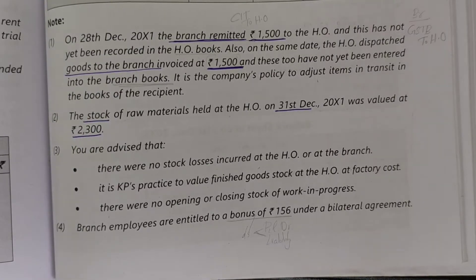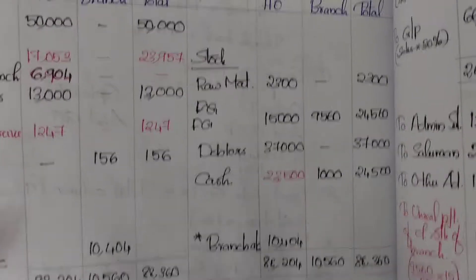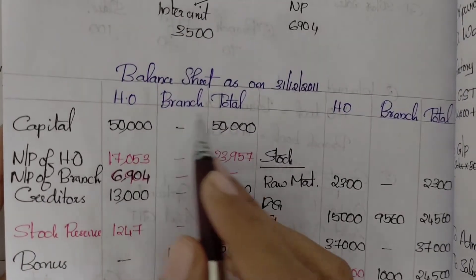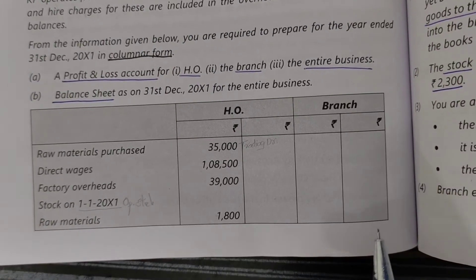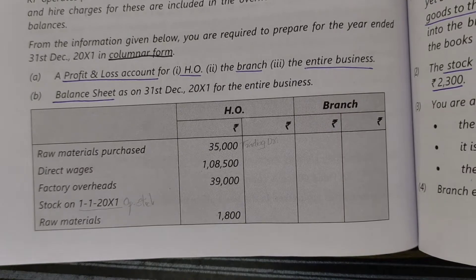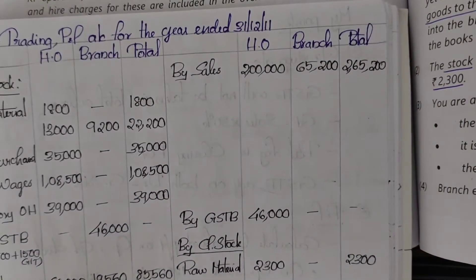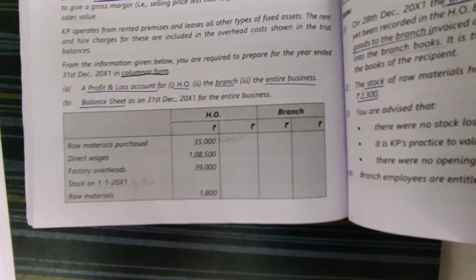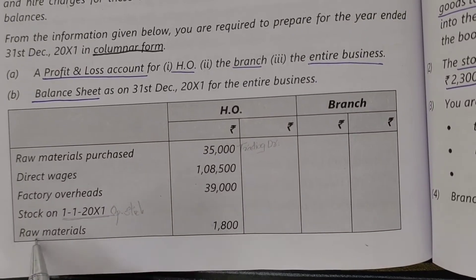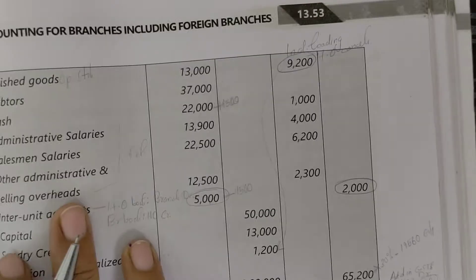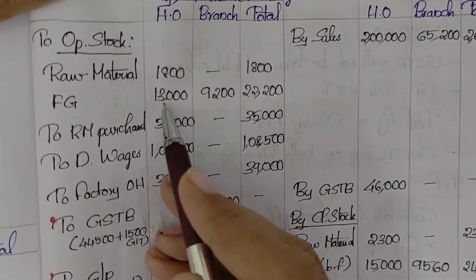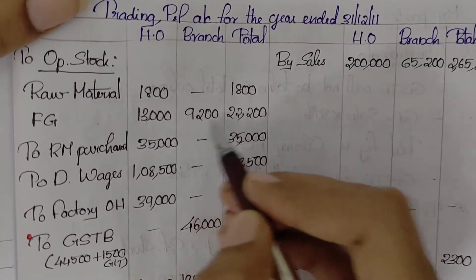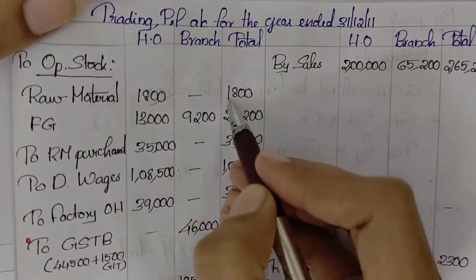We will now prepare the trading P&L account in columnar form: head office column, branch column, and total column for the entire business. First, we prepare the trading account for the year ended 31st December 2011. Opening stock of raw materials is 1800. Opening stock of finished goods: head office 13000, branch 9200, total 22200.